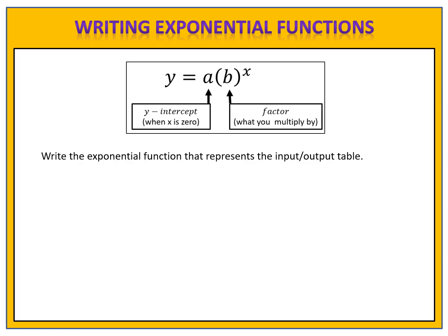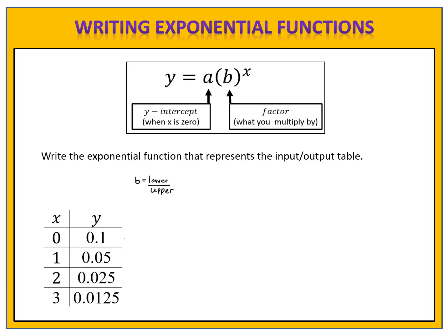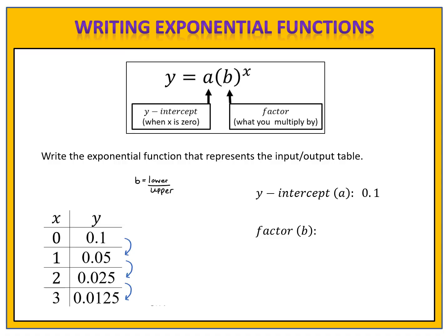Our last example is for you to try. This one looks a little bit different because we have decimals, but remember we need to do the same thing: identify the y-intercept and the factor. If you're having trouble figuring out the factor, use the formula that b equals the lower divided by the upper. Please pause the video, write the function, and come back when you're ready to compare answers. The y-intercept is 0.1, and using the formula each time we find that the factor is 1 half.